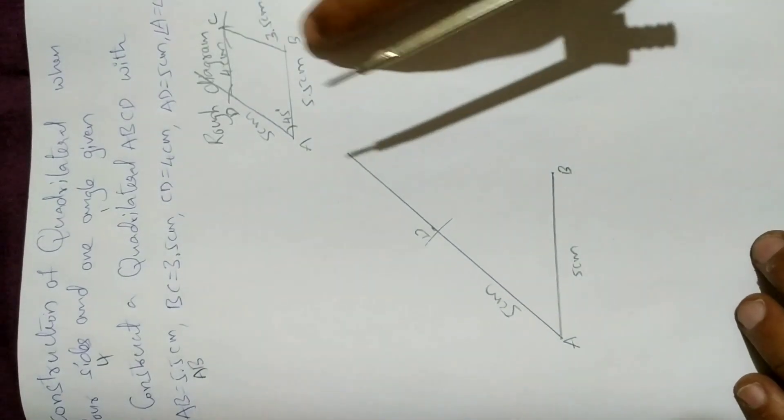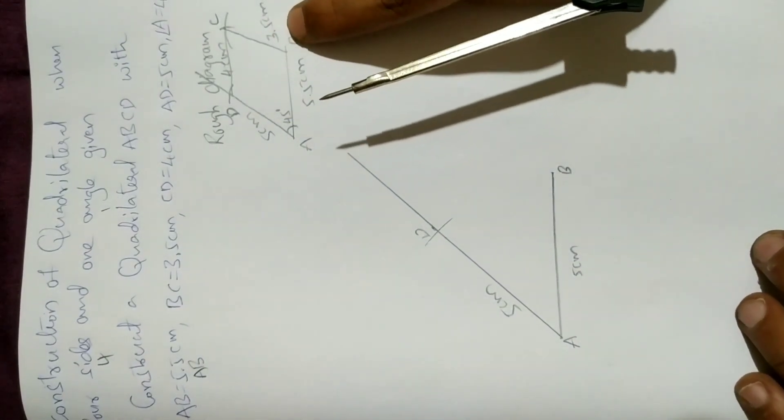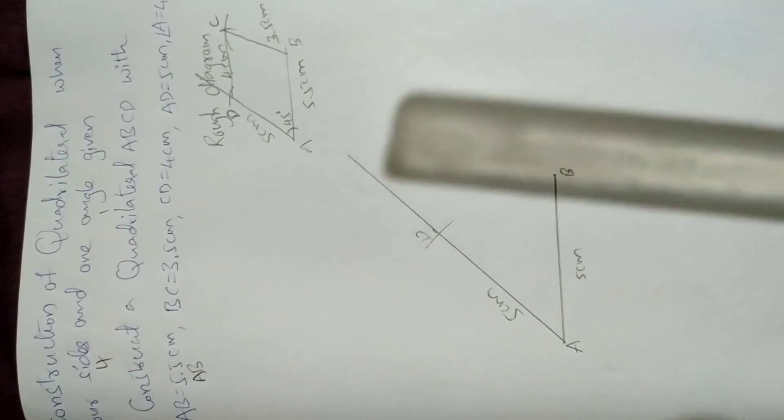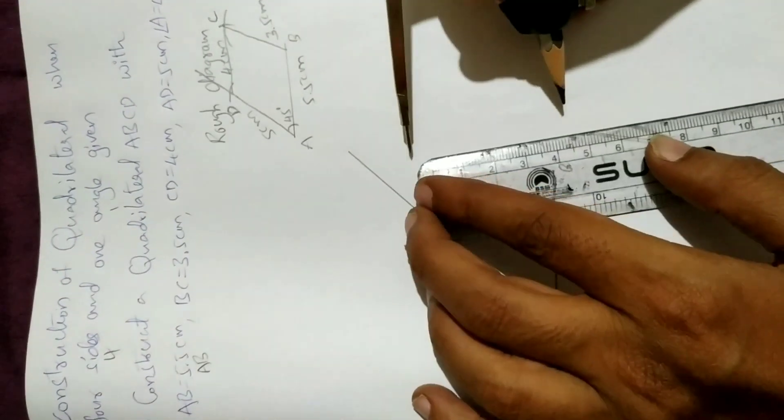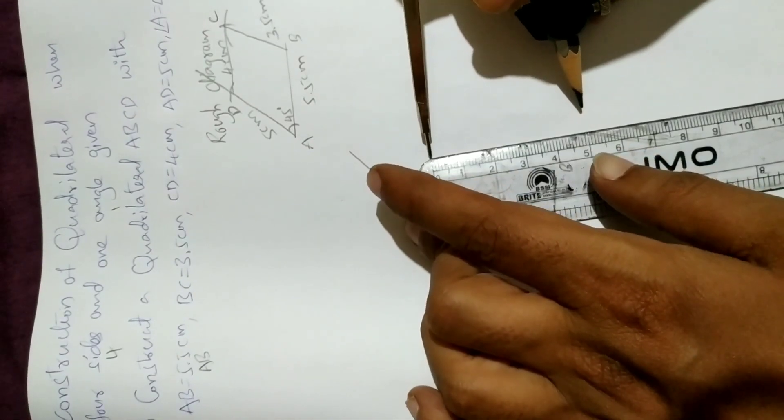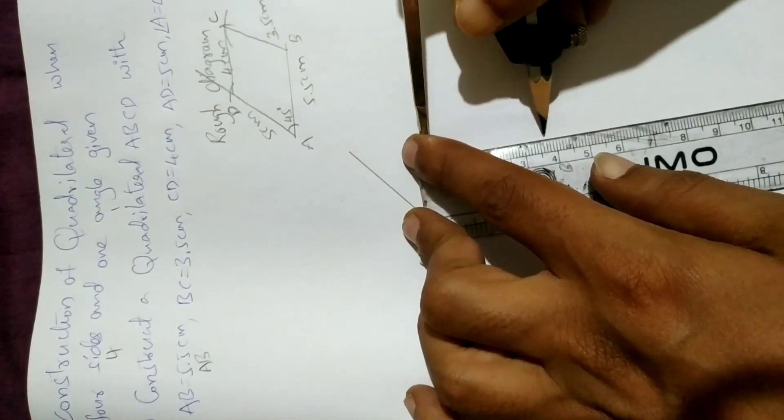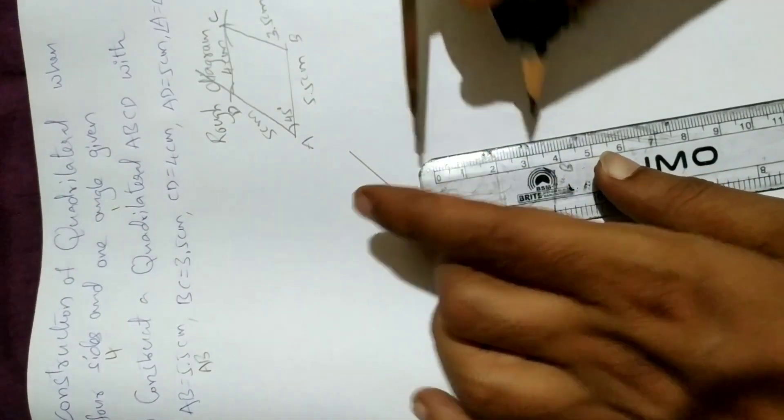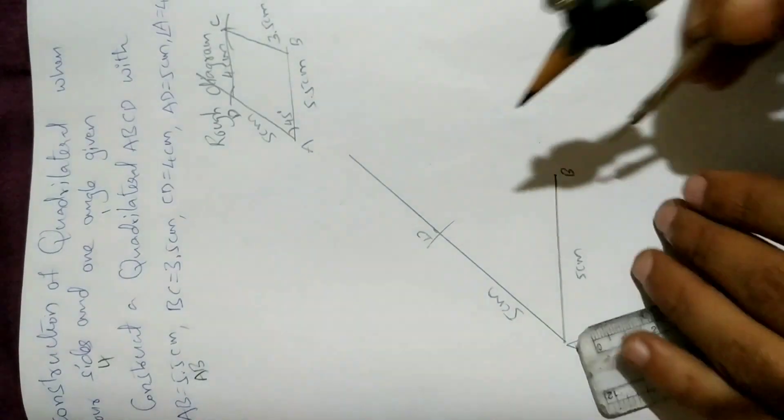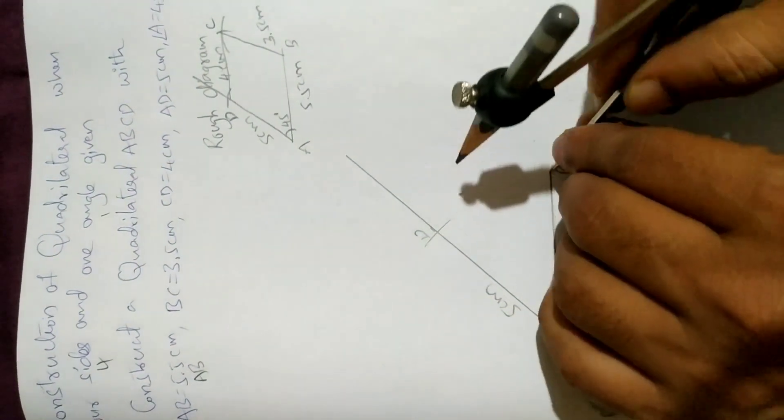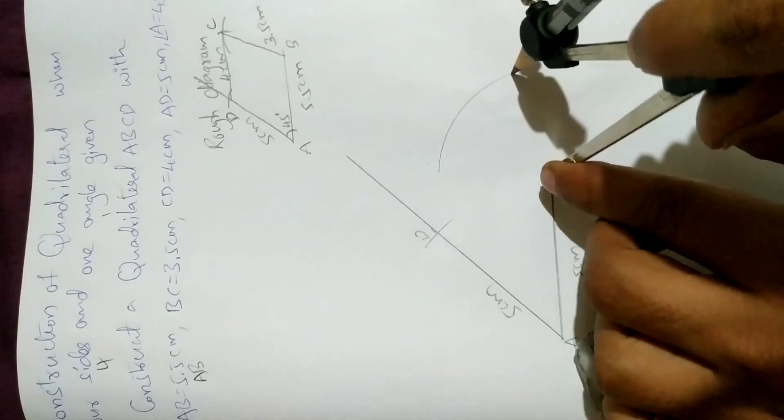Next, we need to draw BC. Take 3.5 centimeters radius, draw an arc from B. So let me take 3.5 centimeters radius from 0, 3.5. Yes, exactly, it is 3.5. From point B, draw an arc. Right, drawn.